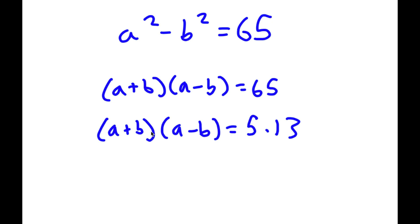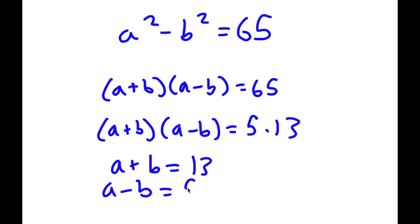So in this case, a plus b would obviously be greater than a minus b. We can think of a plus b as 13 because 13 is greater than 5, and a minus b as 5 because we have something times something equal to something times something. So a minus b is less than a plus b, meaning a minus b would be 5 and a plus b would be 13.